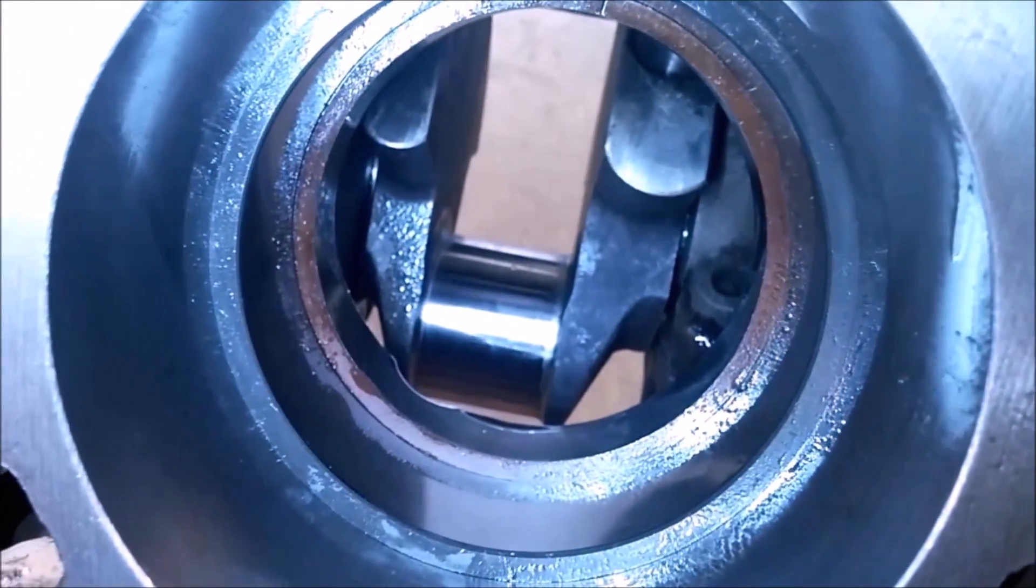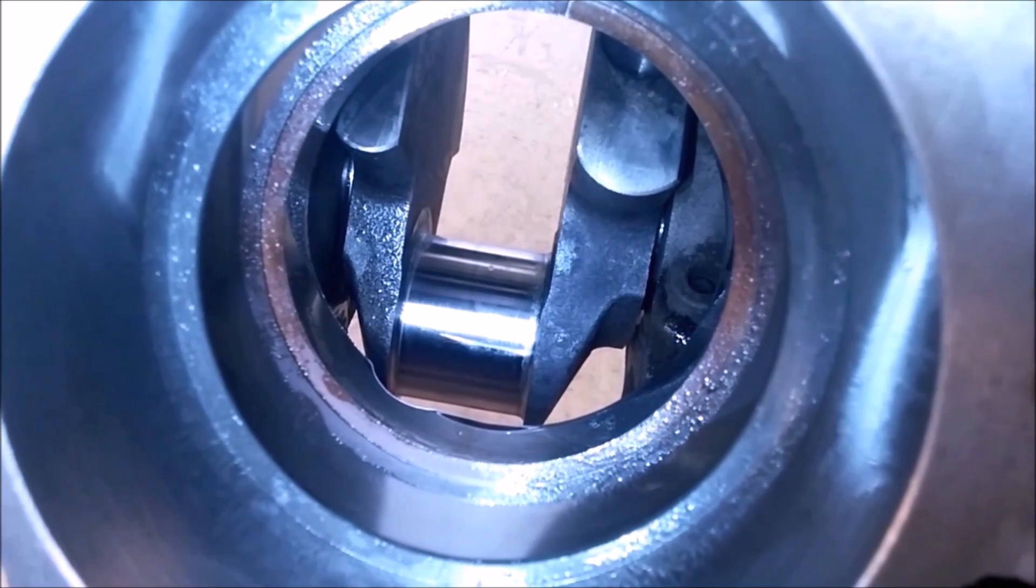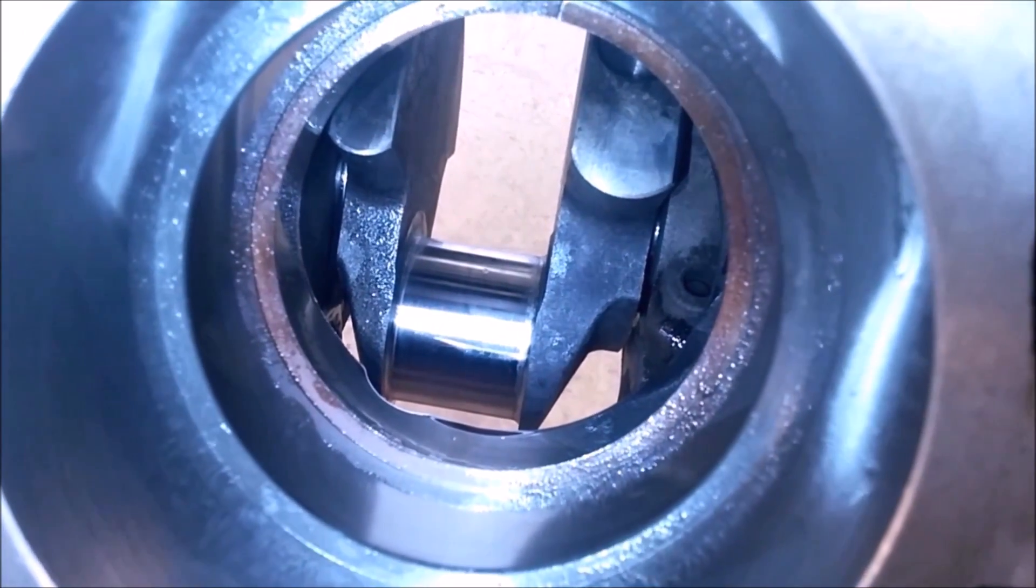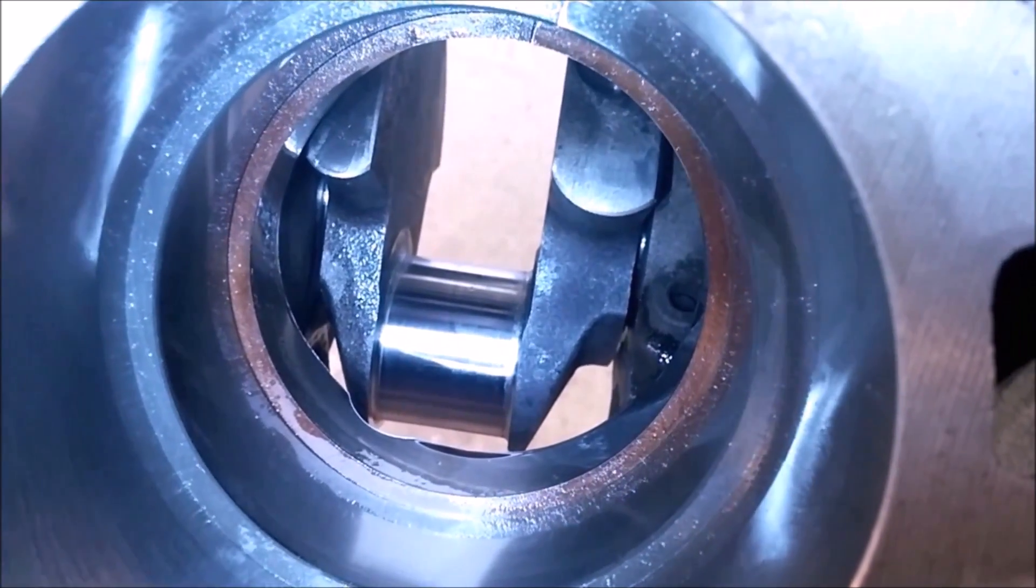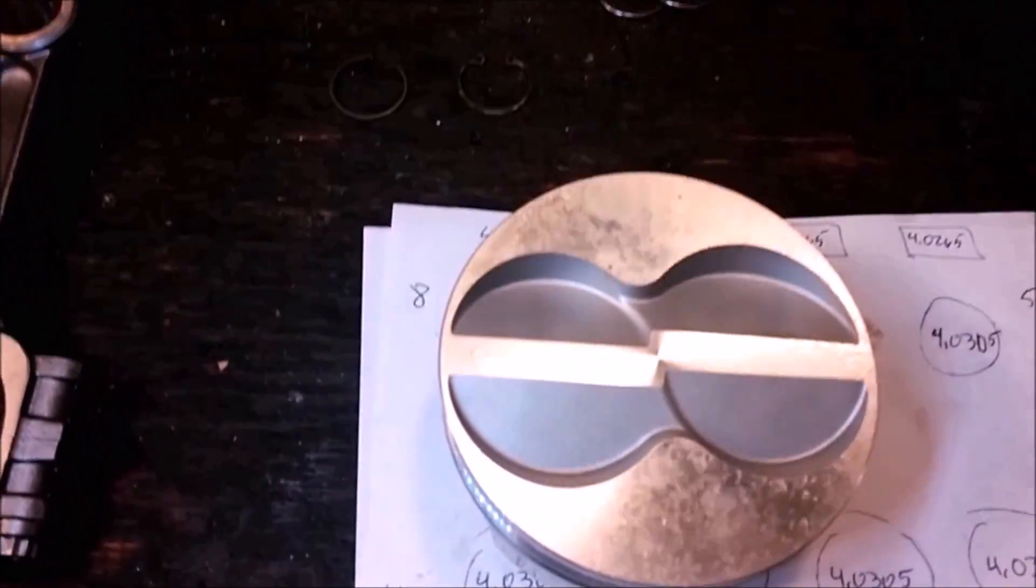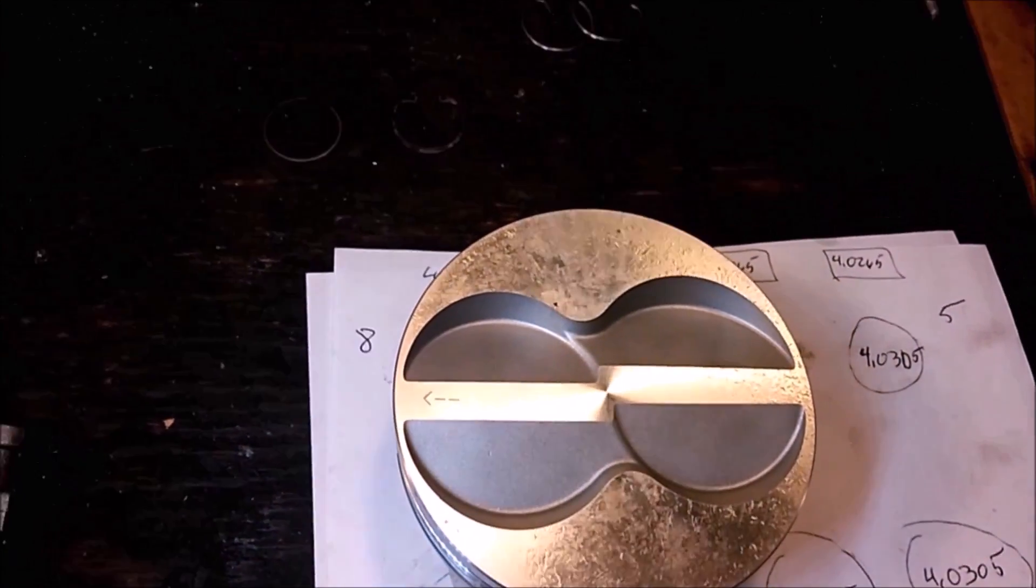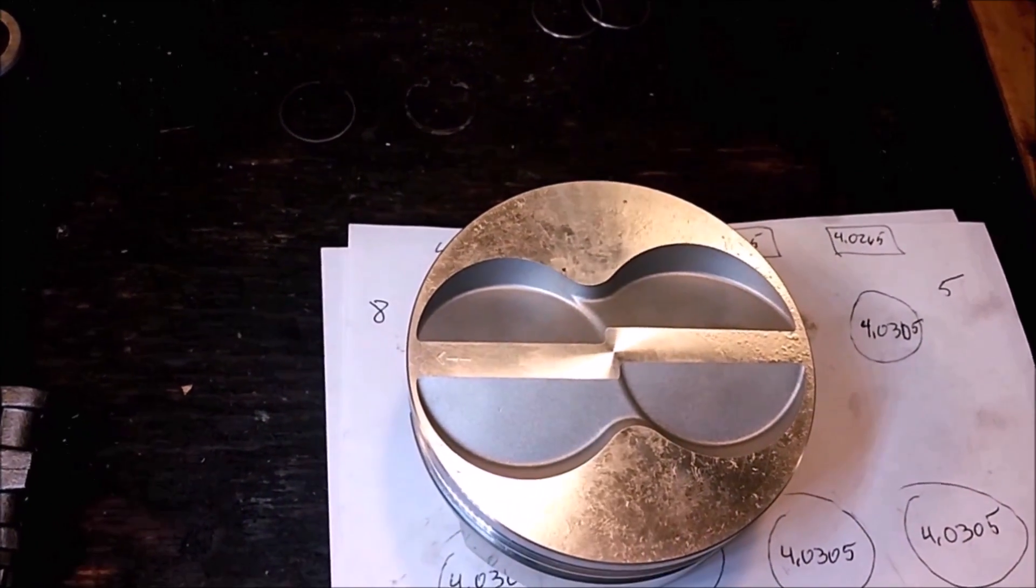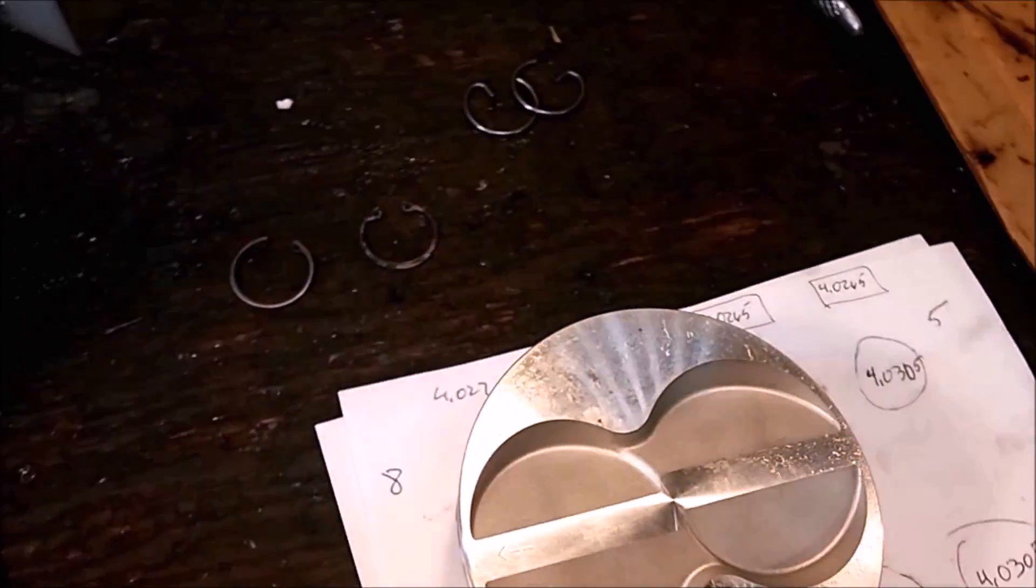But you can see we're going to have two rods per journal, and we need the chamfer of the rod to be next to the counterweight, and we need the arrow on the top of the piston to be pointing toward the front of the engine. So we need to keep that in mind when we're assembling the rods to the piston so that everything is oriented correctly.